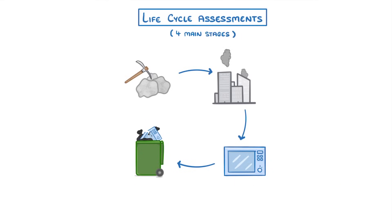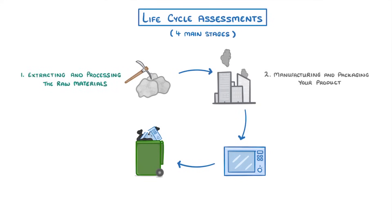There are four main stages to a Life Cycle Assessment: extracting and processing the raw materials, manufacturing and packaging your product, using your product, and finally disposing of it. The important thing about each of these stages is not to memorise lots of facts or examples, but to generally understand them so that you can apply that logic to compare different products.